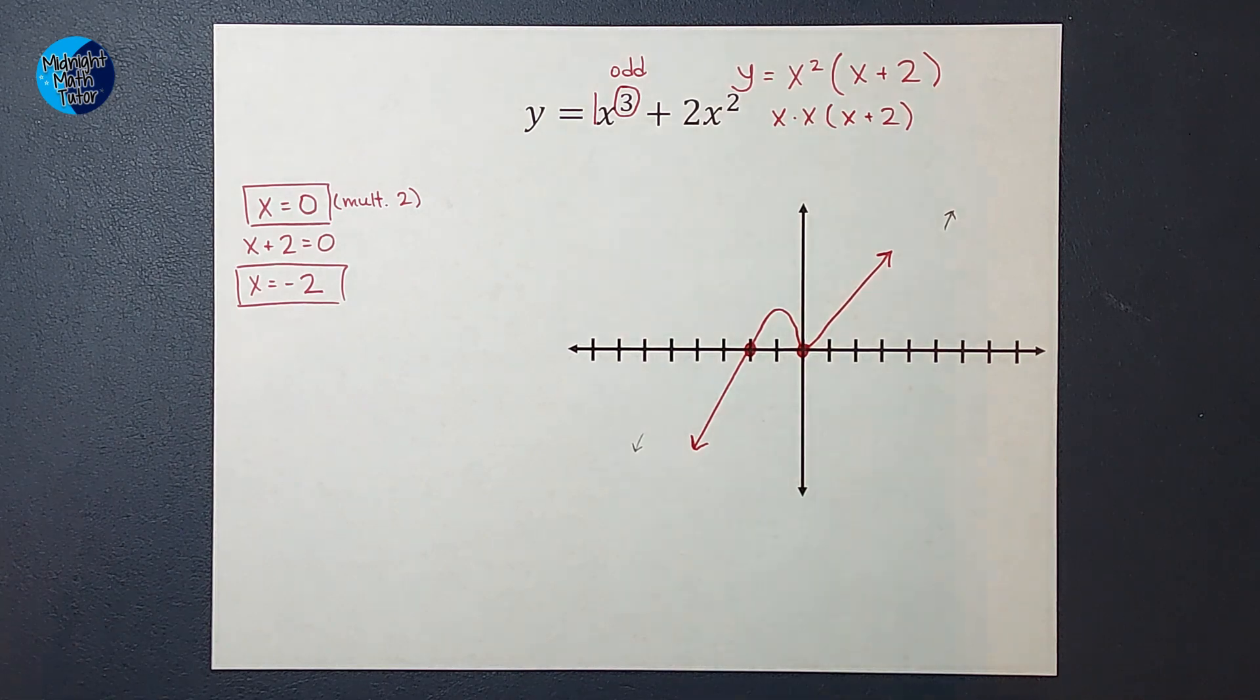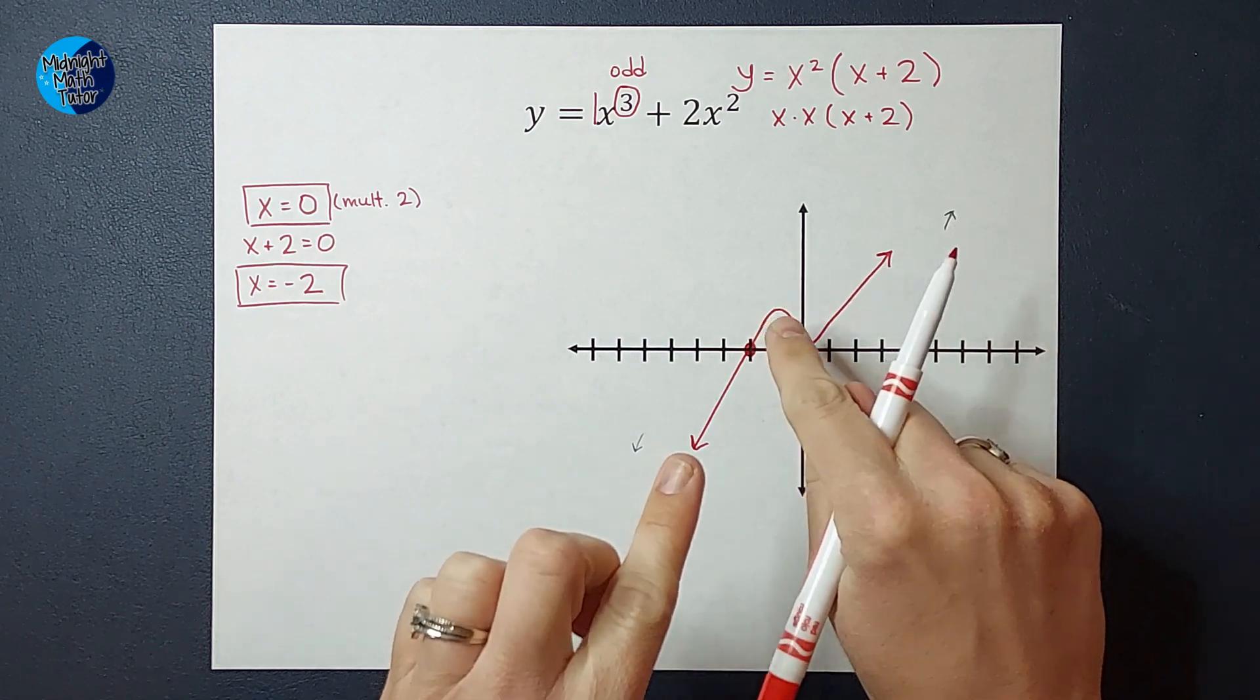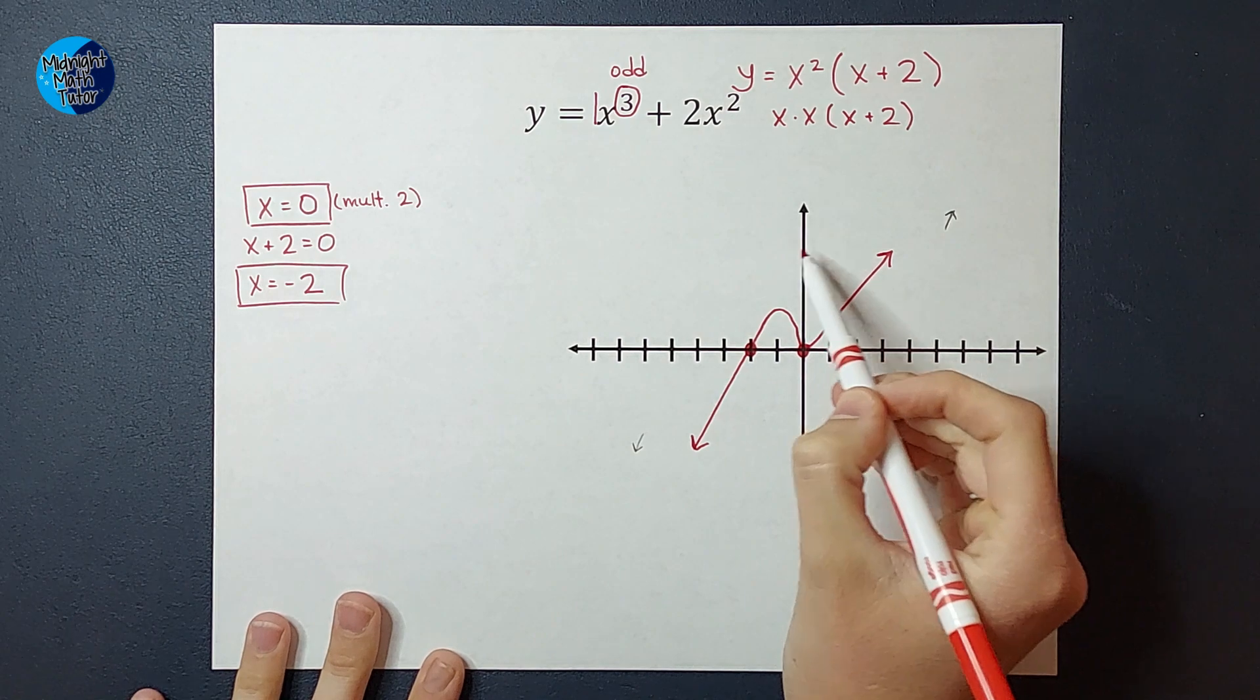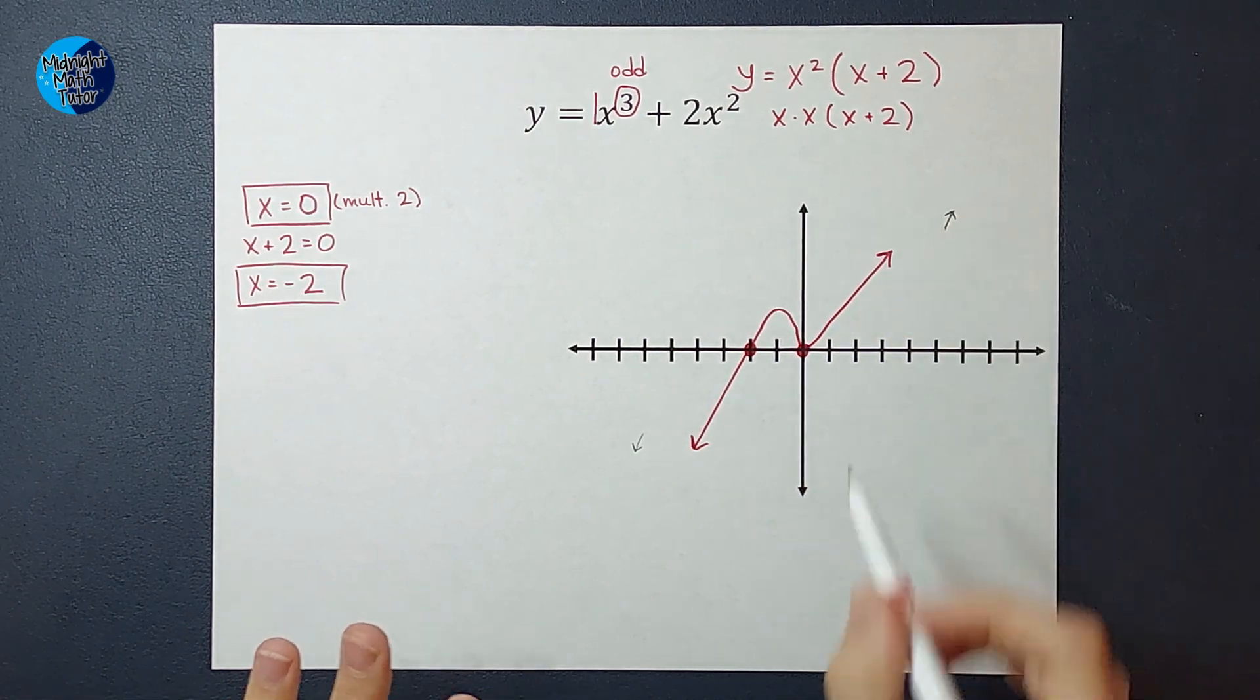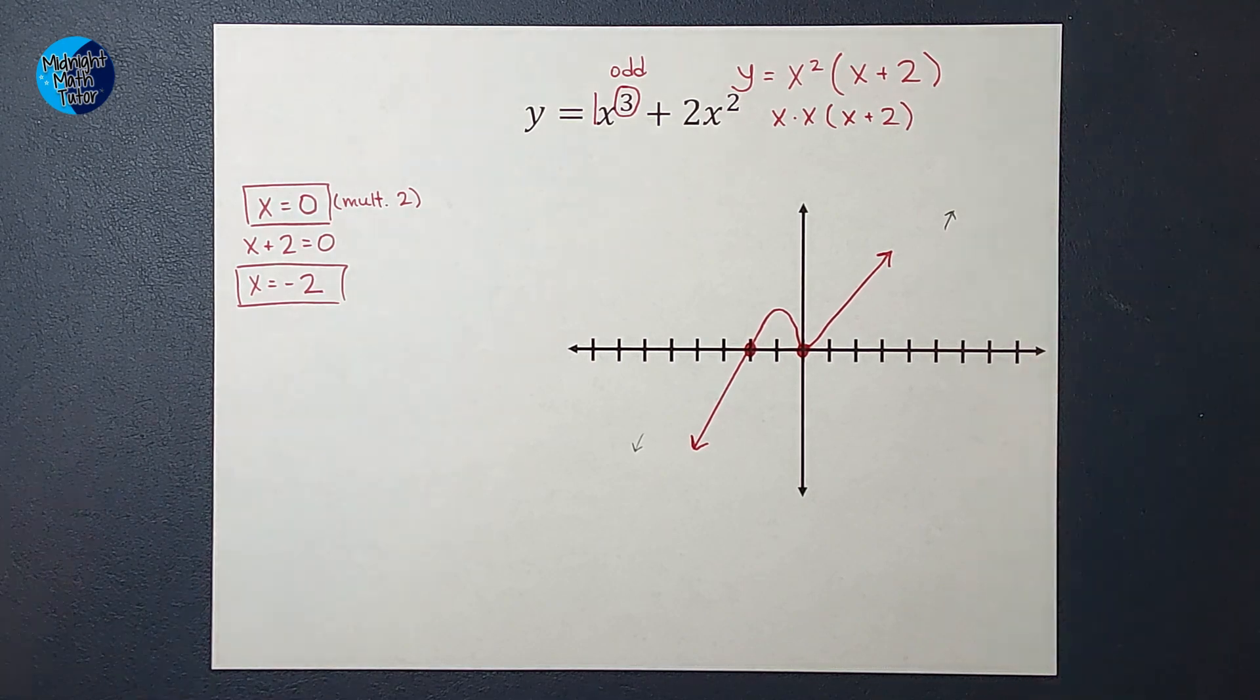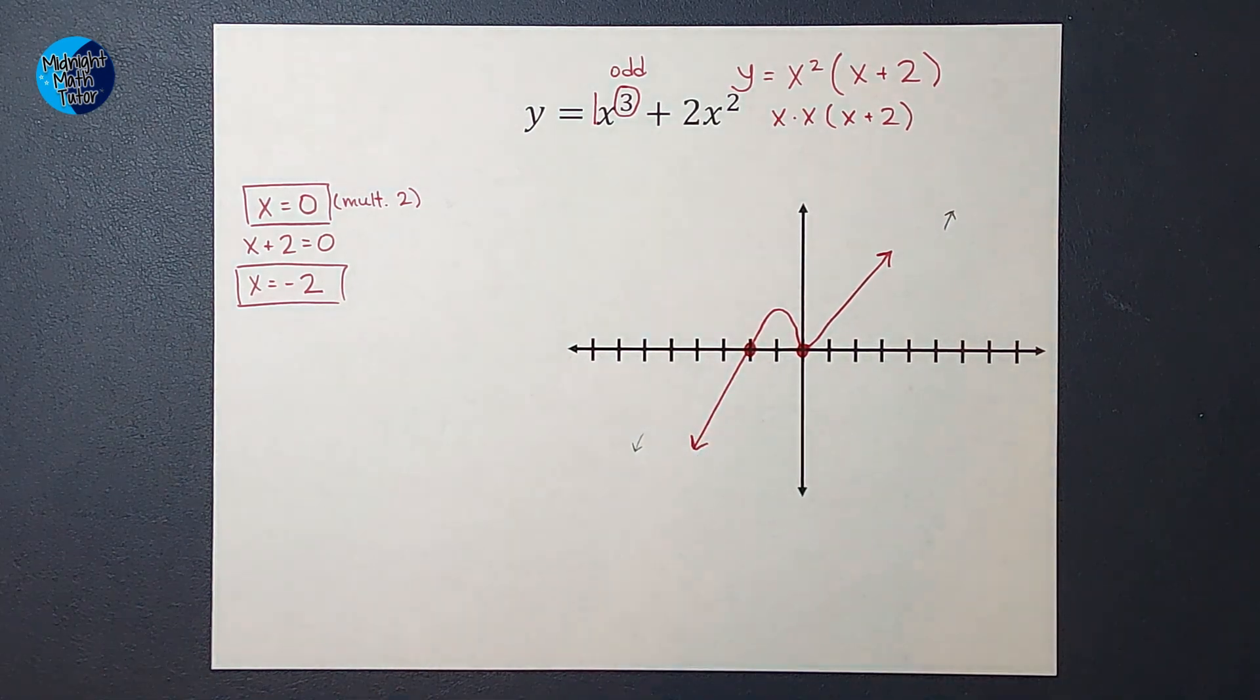The reason this step is optional at this point is because your teacher may not really care how accurate the height of these bumps are at this current time. That's why I didn't put tick marks on the up and down for now, because this is just a rough sketch and we're not doing exact points except for these guys.